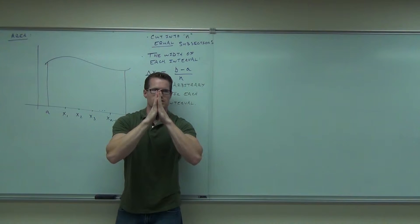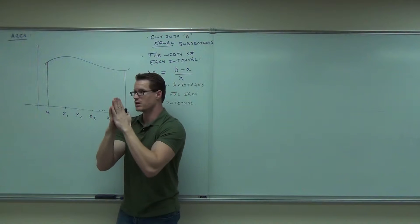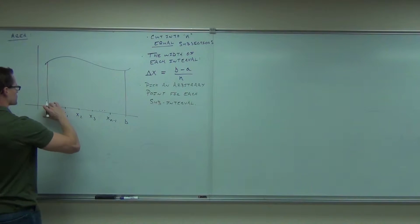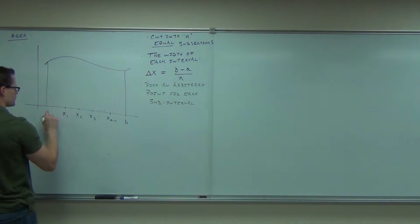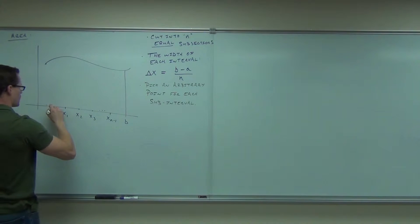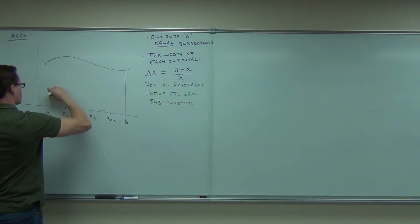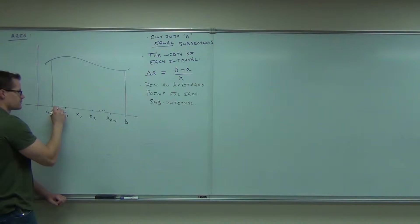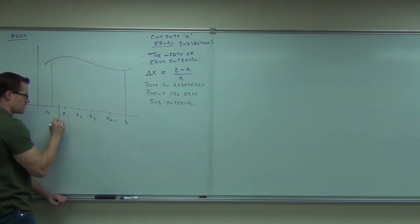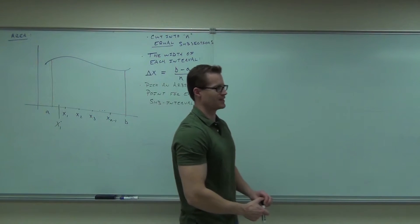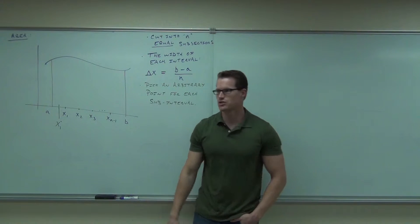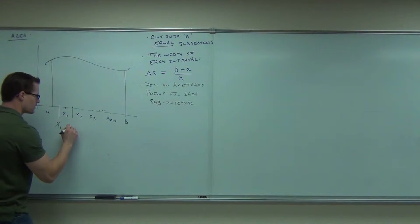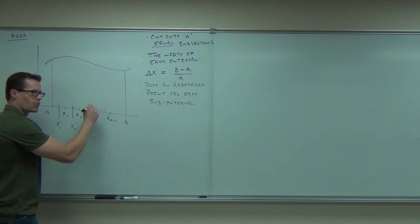It's like trying to put two hairs together and saying find the distance between them. There's something in between them, but it doesn't really matter because they're so thin anyway. So we'll pick some arbitrary point. That arbitrary point we're going to call x sub 1 dot. Here we'll pick x sub 2 dot, and so on and so on.